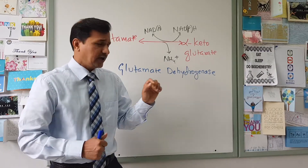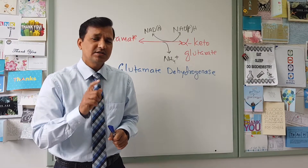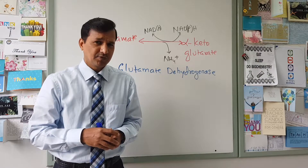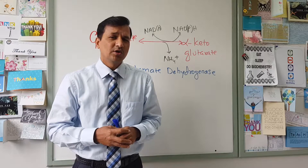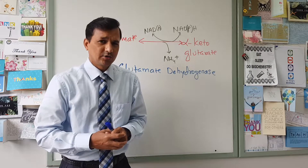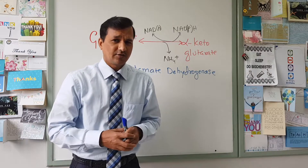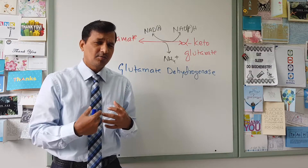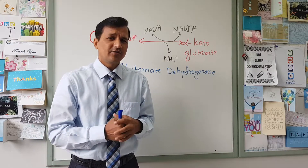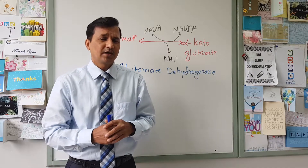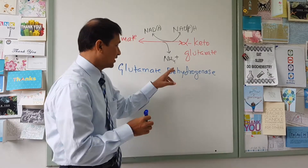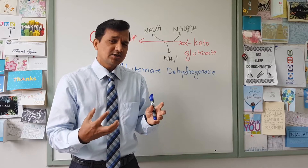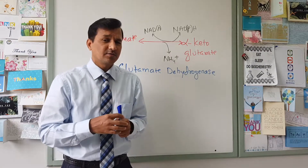Glutamate dehydrogenase is also special because it is one of only three enzymes in our body that has the ability to fix free ammonium ion in the tissues. Whenever there is excess free ammonium ion present in the tissue, it can be fixed to an organic molecule, because free ammonium ion can lead to neurotoxic effects and neuronal degeneration. In our blood or tissues, ammonium ion (NH4+) is the predominant form — for every 100 ammonium ions there is only one ammonia molecule (NH3).